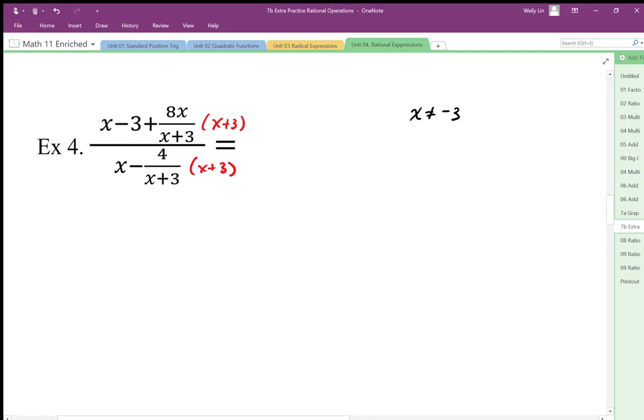I need to make sure I distribute. x squared minus 9 plus - when I multiply this out, the x plus 3 is canceled, so I'm just left with 8x. Here again I distribute. x plus 3 times x becomes x squared plus 3x, and then the x plus 3 is canceled, so I end up with minus 4.